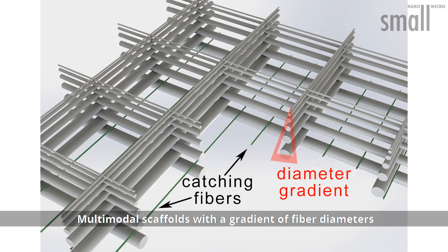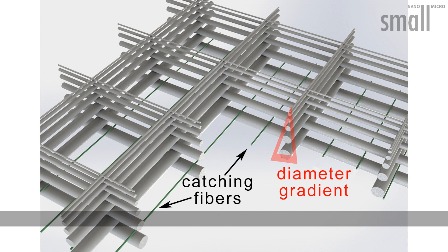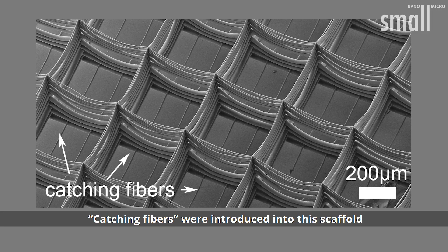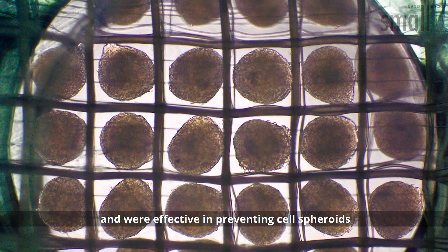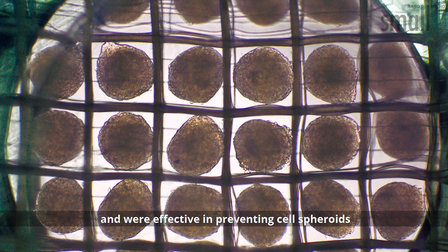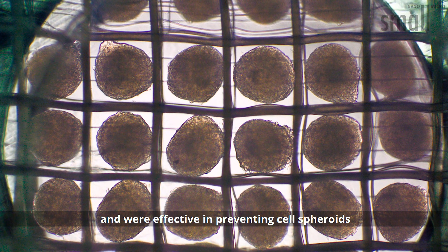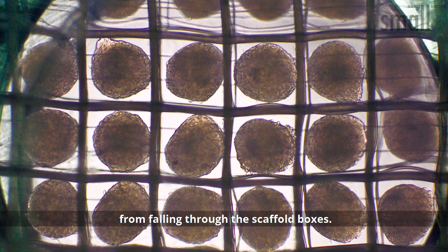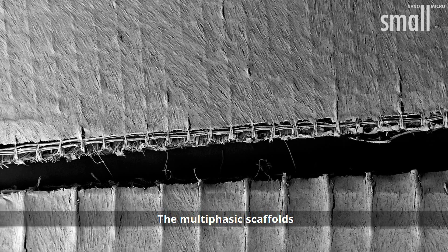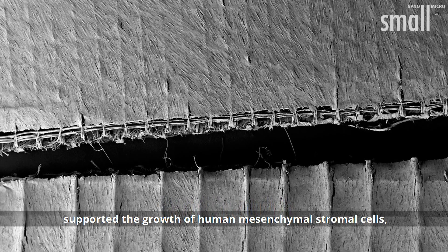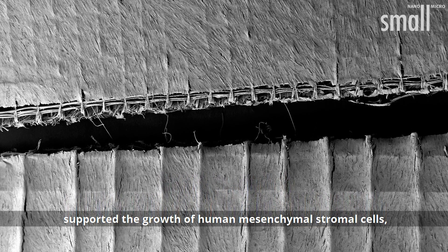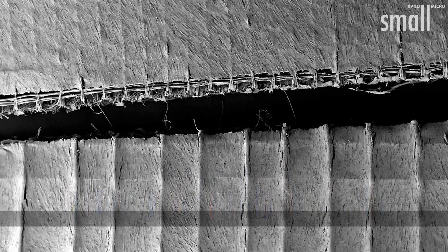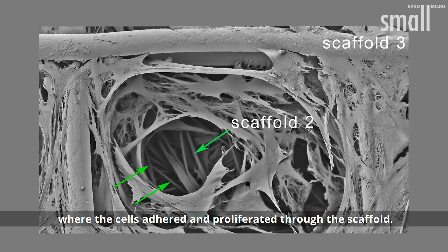Multimodal scaffolds with a gradient of fiber diameters were also produced. Catching fibers were introduced into this scaffold and were effective in preventing cell spheroids from falling through the scaffold boxes. The multiphasic scaffolds supported the growth of human mesenchymal stromal cells while the cells adhered and proliferated through the scaffold.